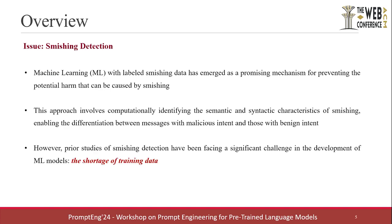There are a couple of issues regarding smishing detection. Machine learning with labeled smishing data has emerged as a promising mechanism for preventing potential harm caused by smishing. This approach involves computationally identifying the semantic and syntactic characteristics of smishing, enabling differentiation between messages with malicious intent and those with benign intent. However, prior studies have faced a significant challenge due to the shortage of training data and the lack of publicly available data.